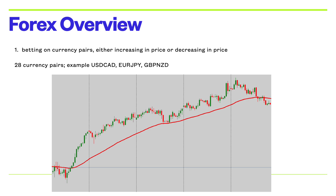So Forex overview: the number one thing you do is you bet on a currency pair, either increasing in price or decreasing in price. You make money if you buy and you sell. It's all done on margin and leverage, and it's all built into any brokerage account — you can set one up for free. In all basic senses, there are 28 main currency pairs. An example is USDCAD — U.S. dollar compared to the Canadian dollar — EURJPY, the euro compared to the Japanese yen, or GBPNZD, the British pound compared to the New Zealand dollar.